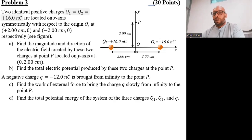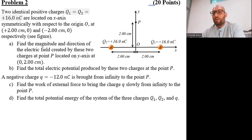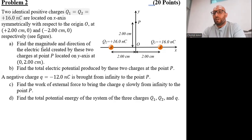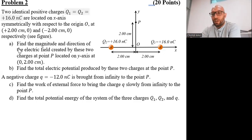Today we will solve problem number two from the final exam of general physics 2 of fall 2023. Identical positive charges Q1 and Q2, equal to 16 nanocoulombs, are located on the x-axis symmetrically with respect to the origin O at x1 = 2 cm, y1 = 0, and x2 = -2 cm, y2 = 0. Question 8: find the magnitude and direction of the electric field created by these two charges at point P located on the y-axis at x = 0, y = 2 cm.